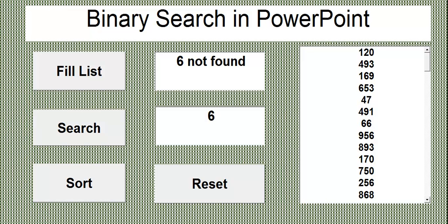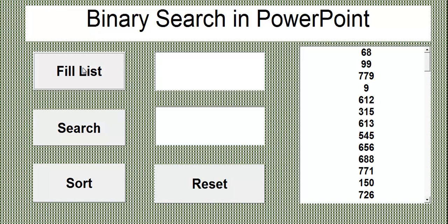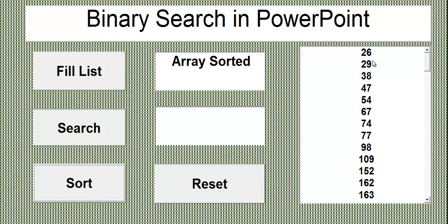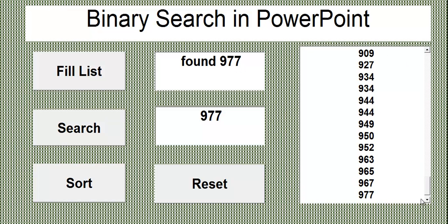This is a binary search application. If I click reset, all the test content disappears. To fill it up, click fill. To search for a number, enter the value. Let's sort it first — you can see it's sorted. I want to find 977, search for it, and 977 is found. You can always check to confirm it's there.